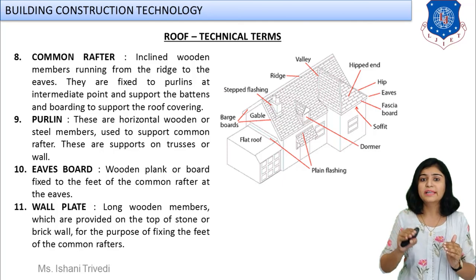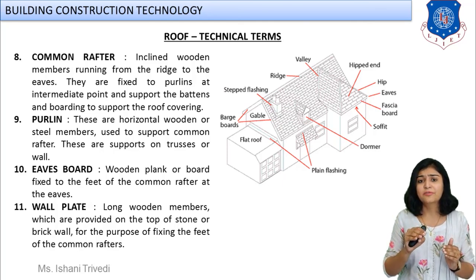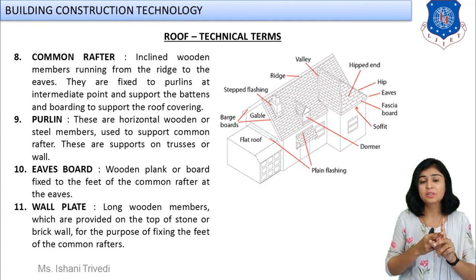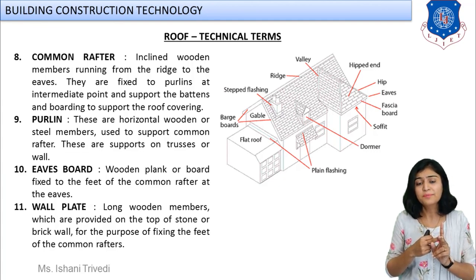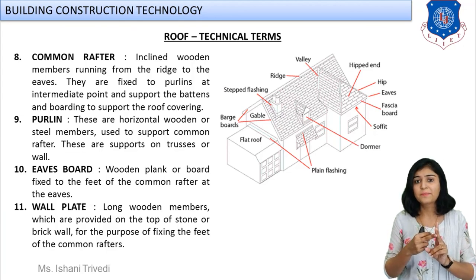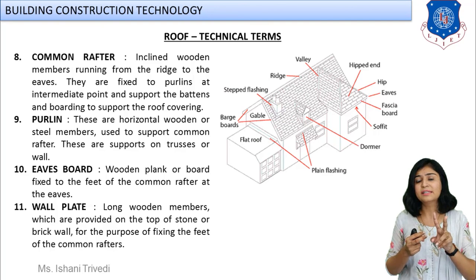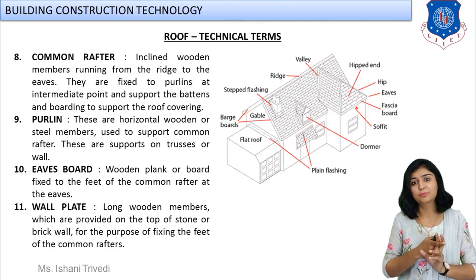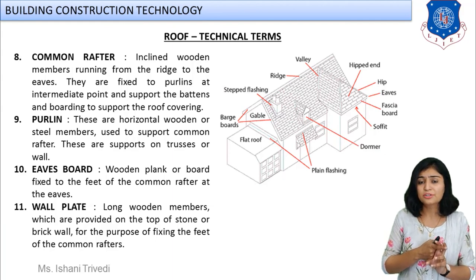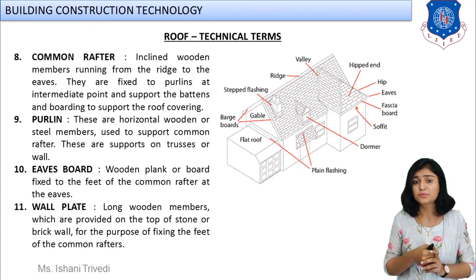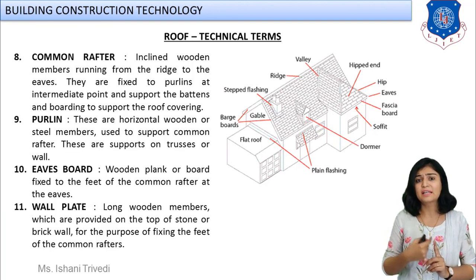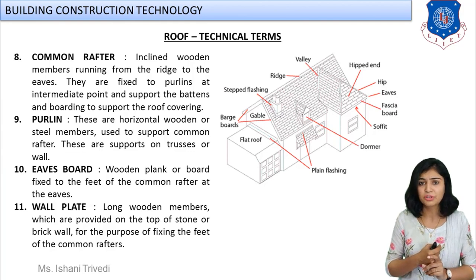Go through all the technical terms in the sketch: we have ridge, valley, eaves, eaves board, ridge and ridge piece, flat roof, rafters and purlings. As discussed, if two roofs are intersecting and two sloping parts are intersecting, they have different names. All of these technical terms are covered here, and in the next session we can discuss further about specific classification of different types of roof and further detailed classification according to your syllabus.